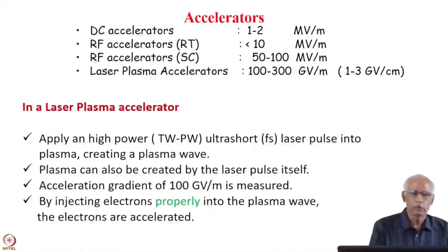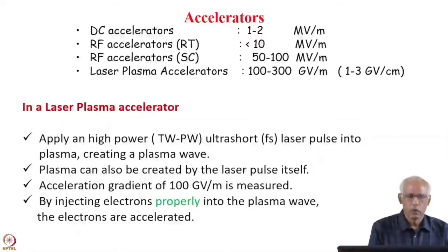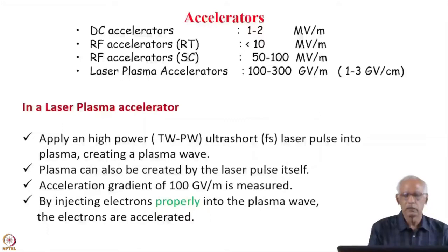We have so far discussed different kinds of accelerators. For example, DC accelerators, where a maximum gradient of 1 to 2 million volts per meter is achieved. Then the improved version is RF accelerators, which could be either room temperature or superconducting type. In room temperature RF accelerators, gradients of the order of 10 million volts per meter are used, and in superconducting RF accelerators, gradients in the range of 50 to 100 million volts per meter are usable.